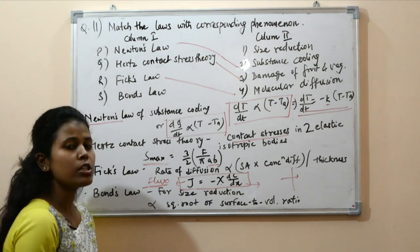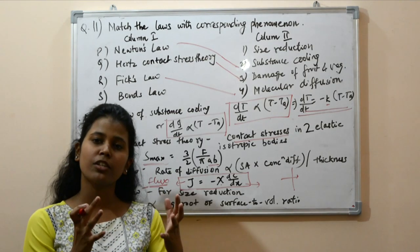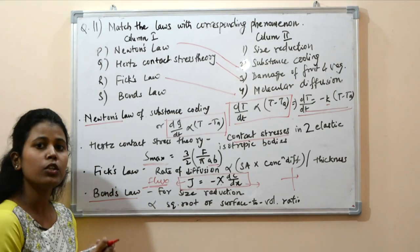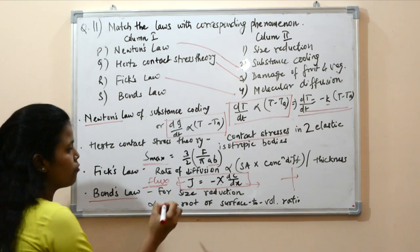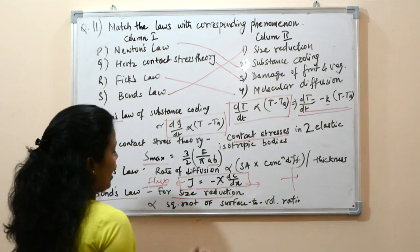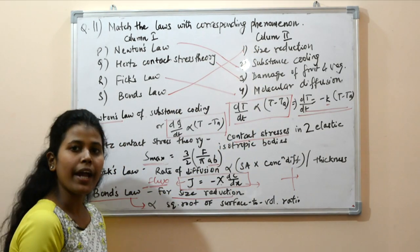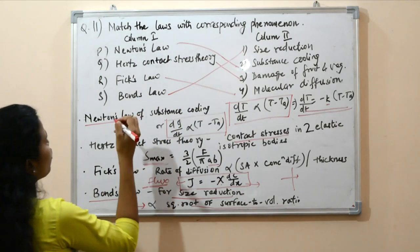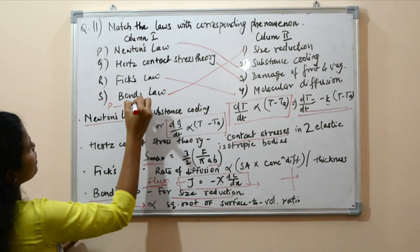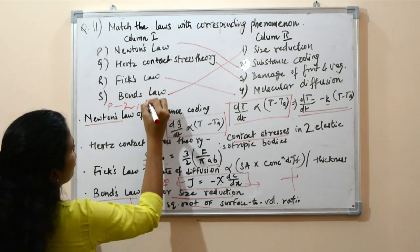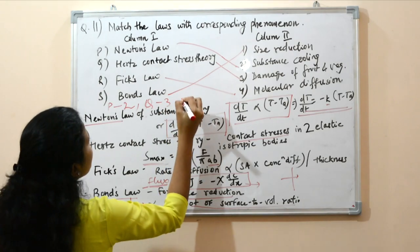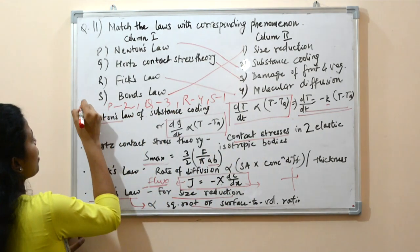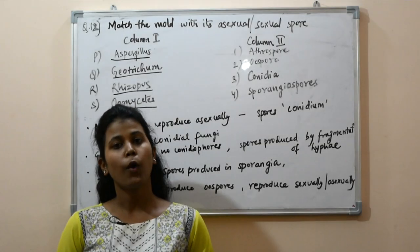The last law is Bond's law, which talks about size reduction processes — whenever a large compound is broken down to smaller compounds, what work is required. Bond's law states that the work required is directly proportional to the square root of the surface-to-volume ratio. So the answer is: Newton's law → substance cooling, Hertz → damage of fruits and vegetables, Fick's law → molecular diffusion, Bond's law → size reduction. The correct answer is option A.